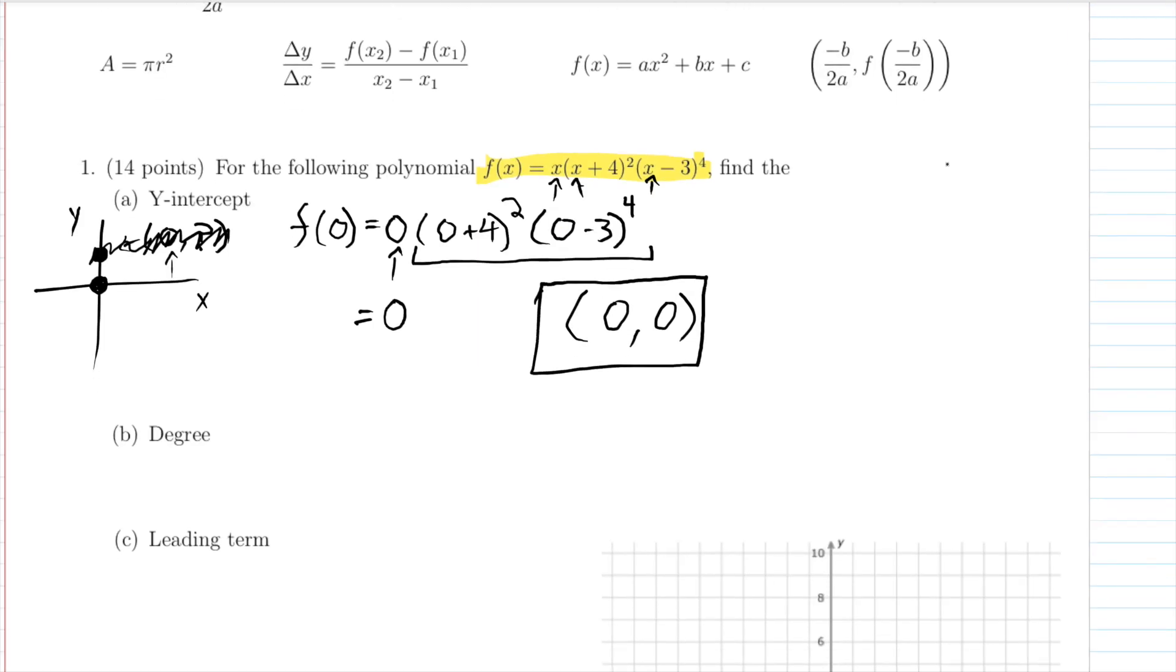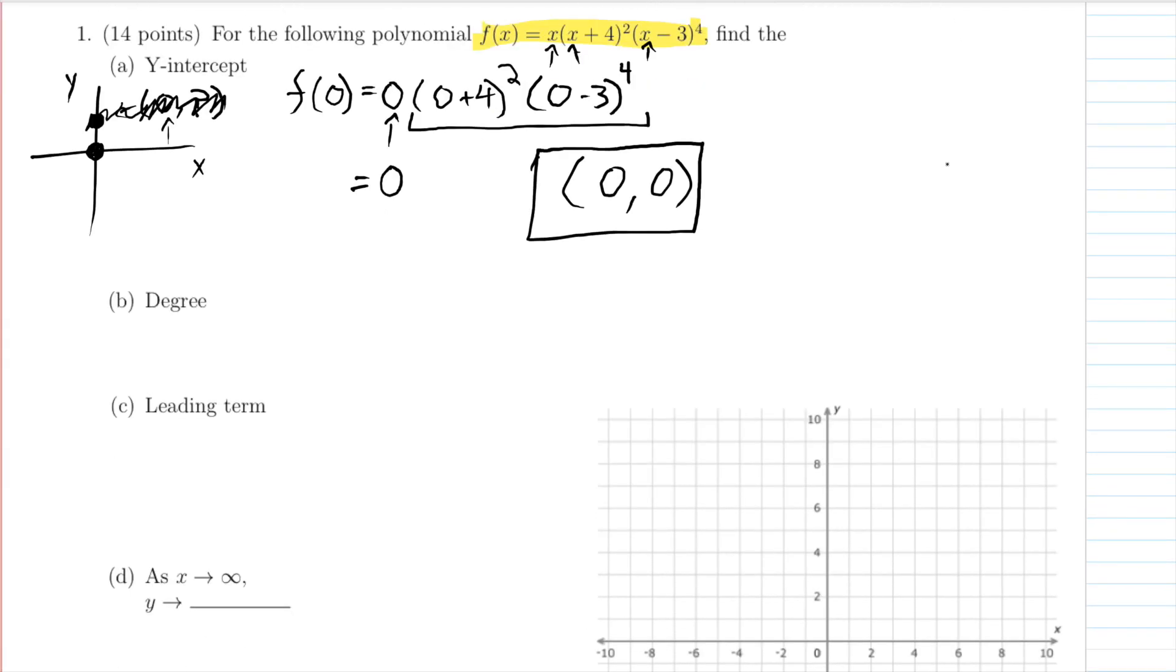So let's look at the next problem, finding the degree of this function. Before we do that one, it might help us to do part c, which is the leading term. If we look at this function, we notice that we have an x in the very front of it. We have an x plus four being squared here. If we multiplied all this out, there would be x squared in there somewhere, which would be multiplied by the x. And in this one, we would have an x to the fourth in there, and that would be multiplied by those two things.